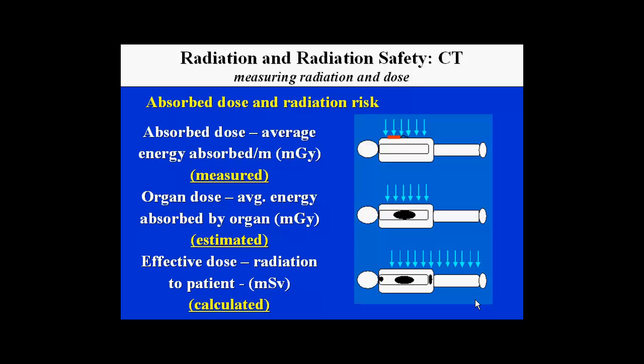Measured and estimated radiation doses are given in mGy, or milligrays, but the effective radiation dose to the patient is given in mSv, or millisieverts. Milligrays and millisieverts are identical in terms of size, but the difference in nomenclature defines whether we're talking about measured or estimated radiation versus calculated radiation pertinent to patient exposure.